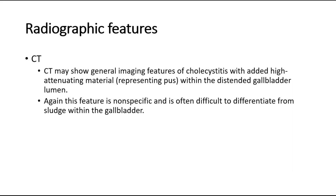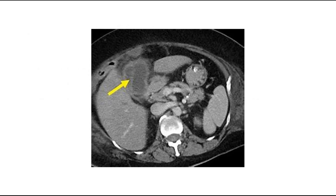We can also do a CT scan, where it may show general imaging features of cholecystitis with added high attenuating material representing pus within the distended gallbladder lumen. Again, this feature is nonspecific and is often difficult to differentiate from sludge within the gallbladder. This is a CT scan showing gallbladder empyema.